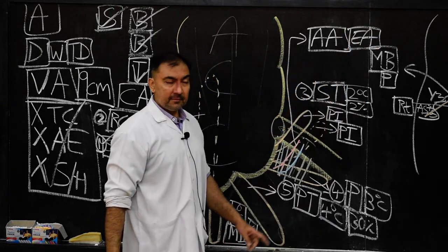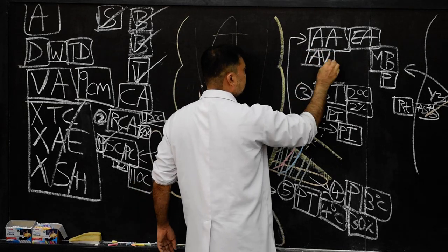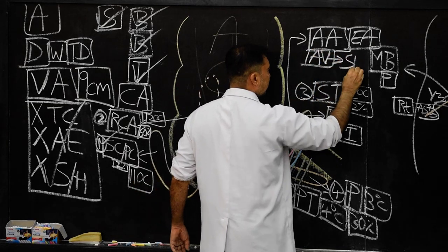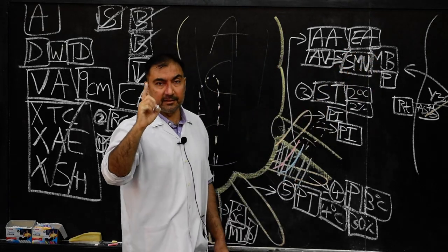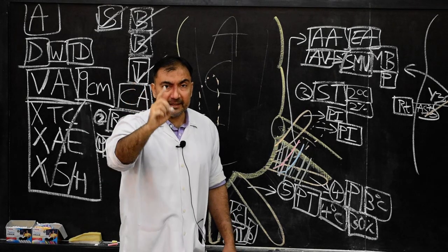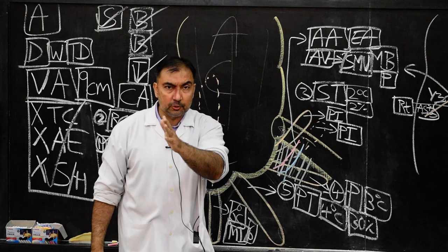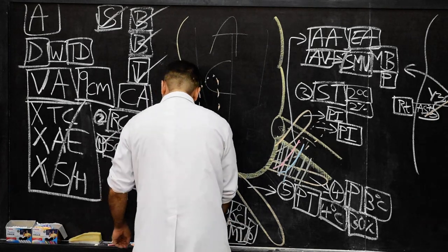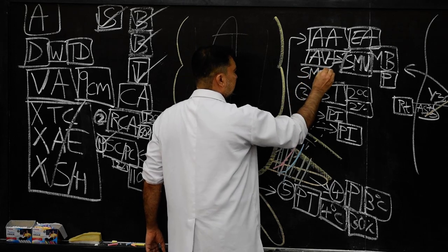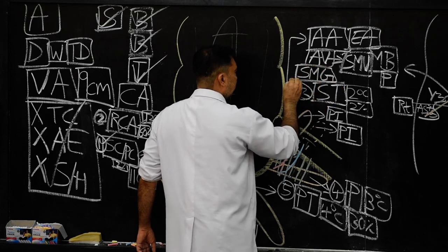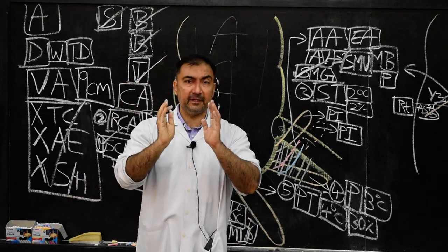The appendicular vein drains into the superior mesenteric vein. The lymphatic drainage goes to the superior mesenteric group of lymph nodes.